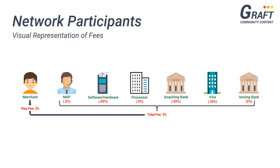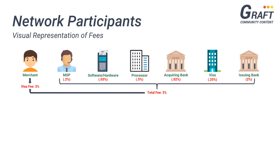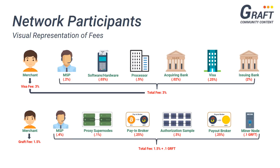Now in the same way that the overall Visa network transaction fee is comprised of various small fees, the overall Graft transaction fee is also comprised of the same. Notice, however, that the overall transaction fee on the Graft network is much lower than Visa's average transaction fee of 3%. This is one of the benefits of accepting digital currencies as a form of payment through a decentralized payment network like Graft's. In fact, transaction fees on the Graft network can actually be much lower depending on the type of payment scenario the merchant is presented with.